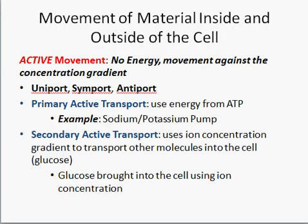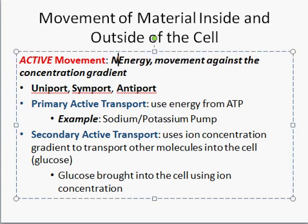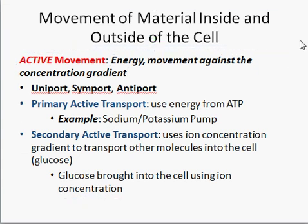Those were all passive transportation — no energy, going with the concentration gradient. Now we have active movement. The key with active movement is that we do require energy, and the movement is against the concentration gradient, so you can actually go from a low concentration to a high concentration. Active requires energy and can move against the concentration gradient. Basic transporter types include uniport, which moves one substance in one direction; symport, which moves two substances in one direction; and antiporter, which moves two substances in opposite directions.